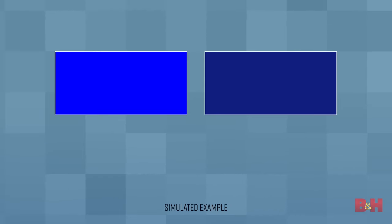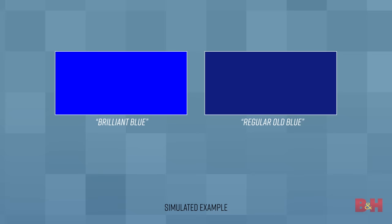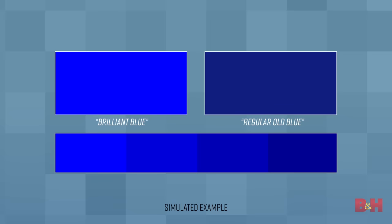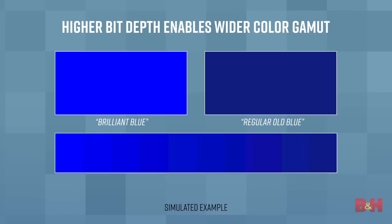Let's say that Rec. 709 has regular old blue, while P3 or Rec. 2020 have brilliant blue — I just made those up. 8-bit color can still display brilliant blue, but it's going to have fewer shades between that and regular old blue. The larger your gamut, the more challenging it is for an 8-bit mode to accurately represent it. This is why HDR requires a minimum of 10-bits.